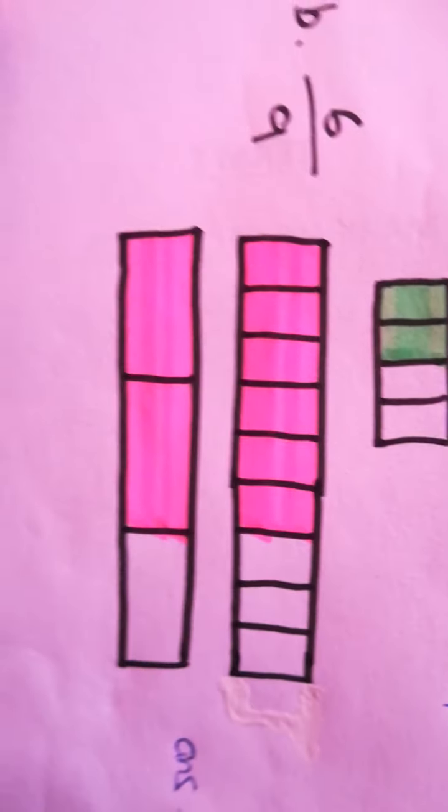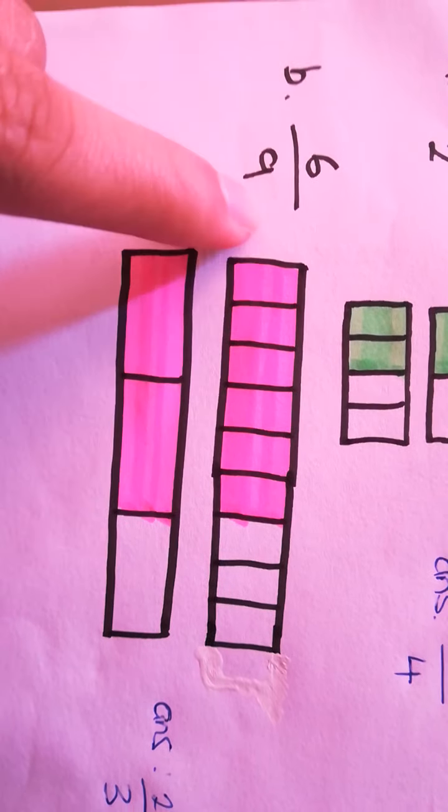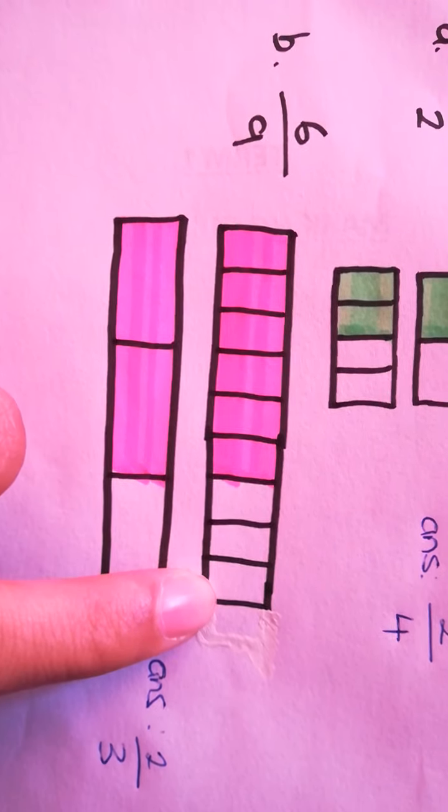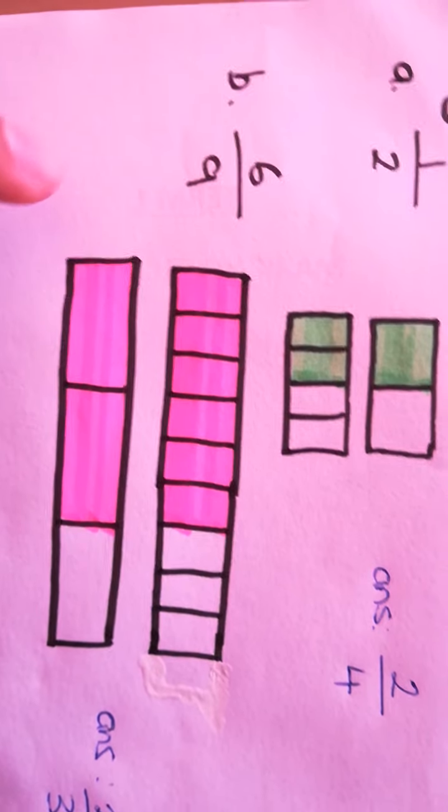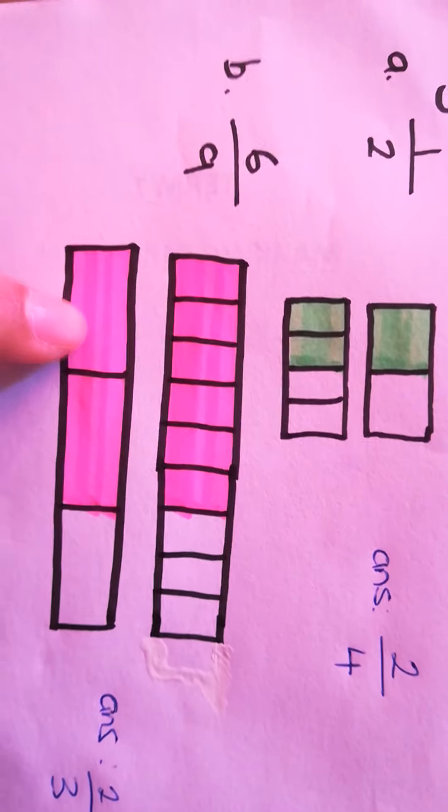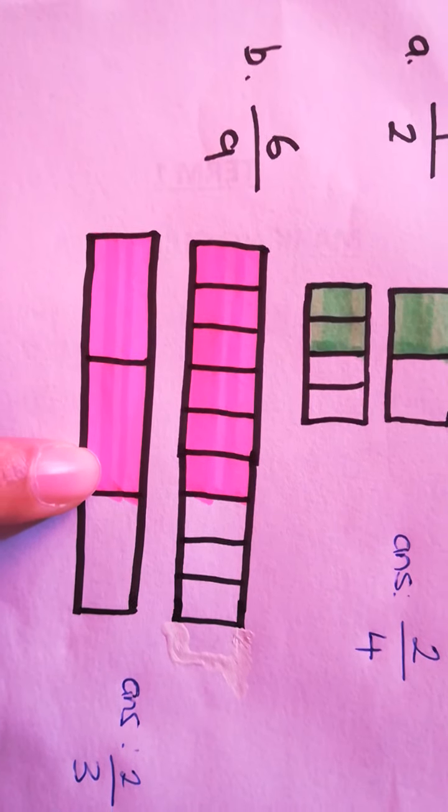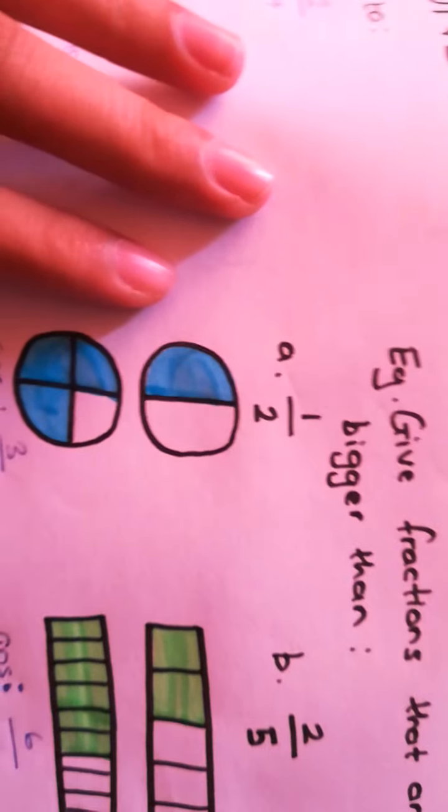Let's do another example. Six out of nine. Here I have drawn a block and divided it into nine equal parts. In order to find out what's equal to that, I drew the same block, divided it into less parts and colored the same amount in. My answer is actually two out of three. Let's look at the next example.